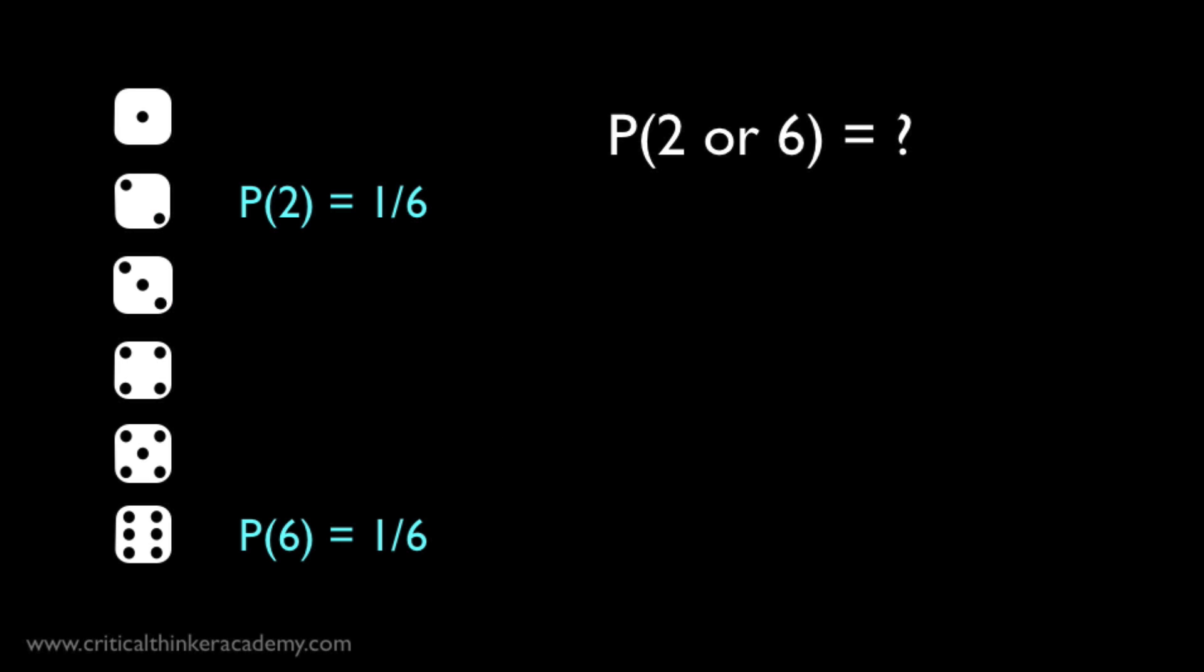Let's consider dice rolls this time. The probability of any particular number, say a 2 or a 6, coming up on a single dice roll is 1 in 6, right? So what would be the probability of rolling either a 2 or a 6? Well, getting a 2 or a 6 is more likely than getting just one or the other by itself, so we know the probability is going to be higher.